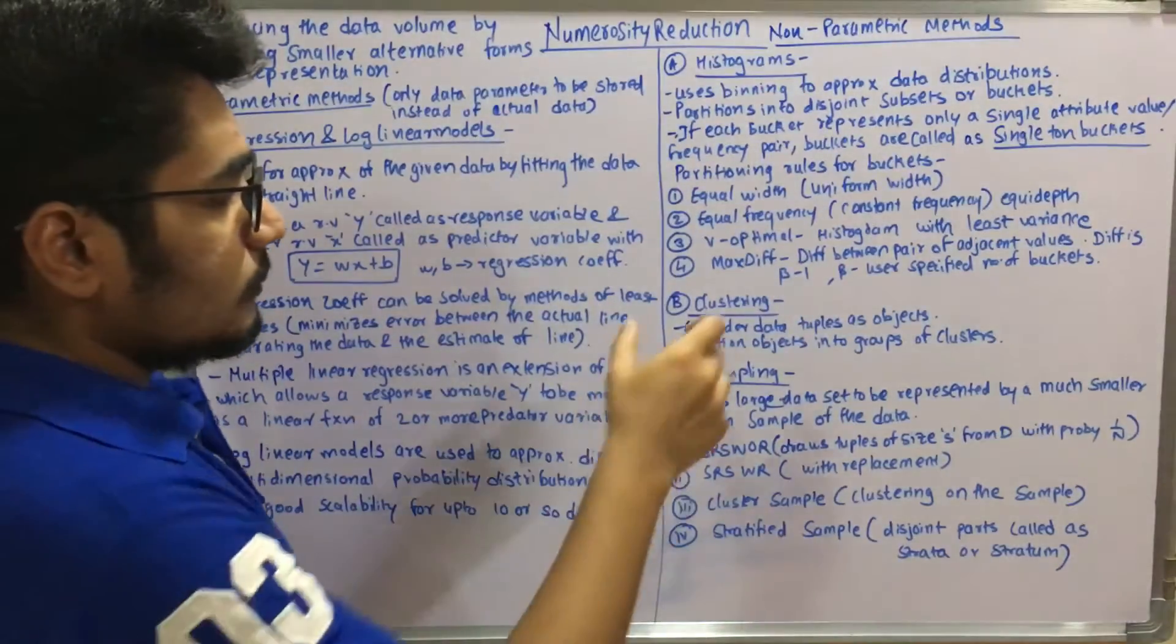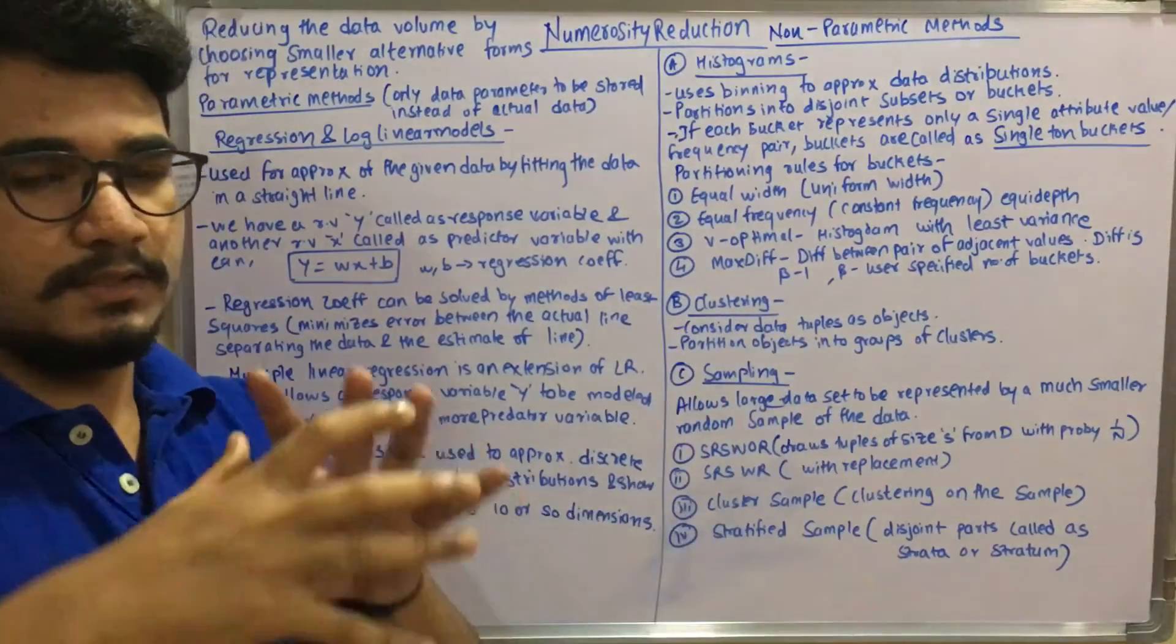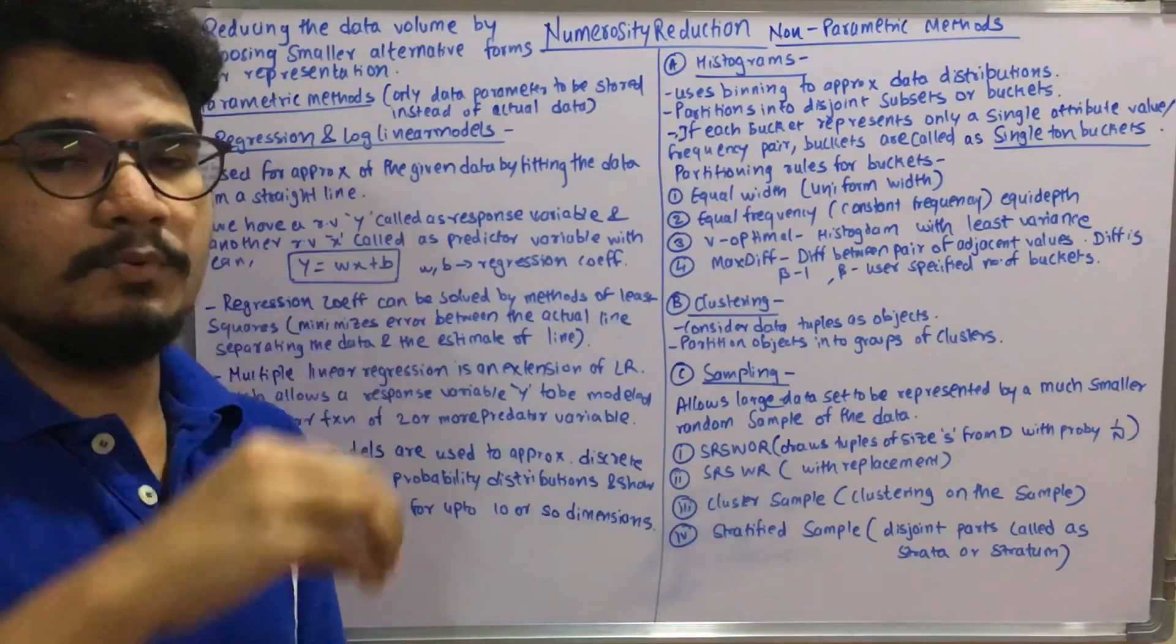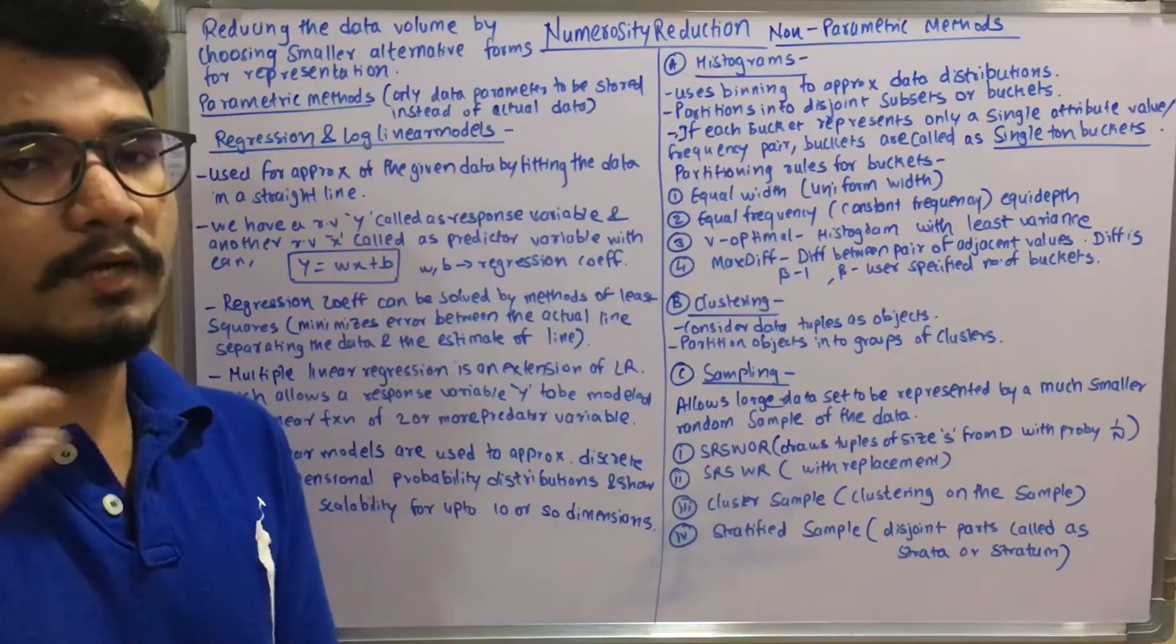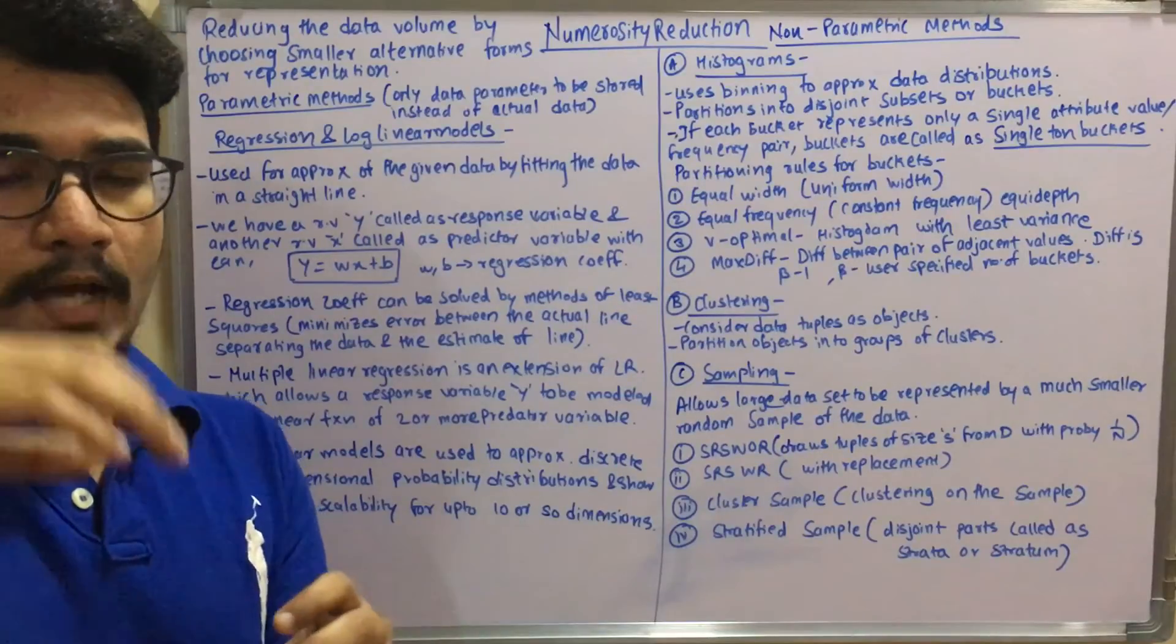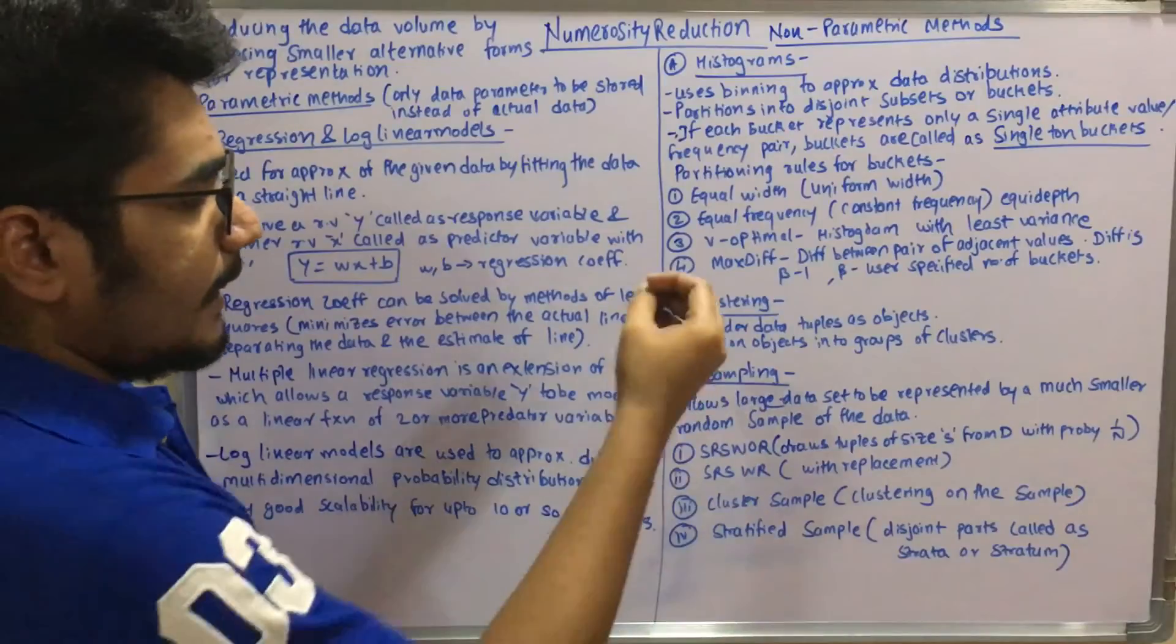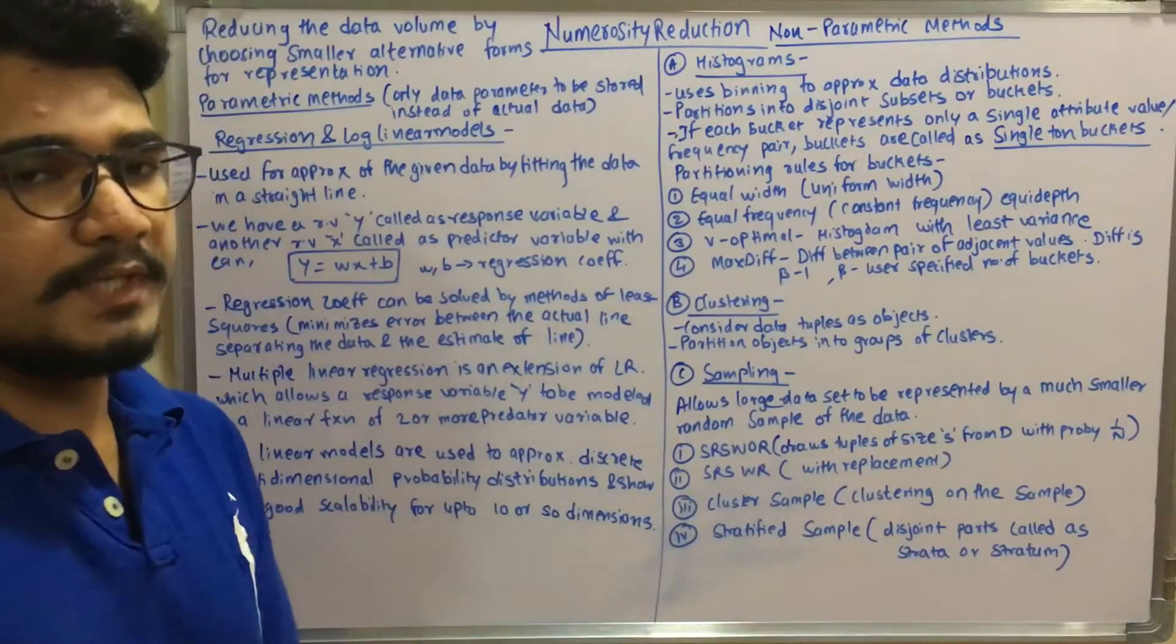So max difference just computes the difference between adjacent values. And those differences are given by beta minus one, where beta is a user-specified number of buckets. Like in that we have seen solving the problem—we had n by d, that is number of items divided by the depth. So that gives your total number of buckets or bins for that particular smoothing technique. So that's nothing but beta. Then you have the clustering technique.